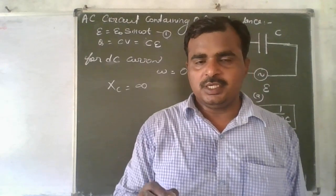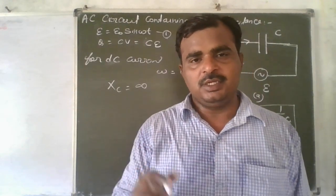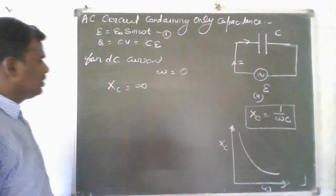That means DC current cannot pass through a capacitor — it will be completely blocked.